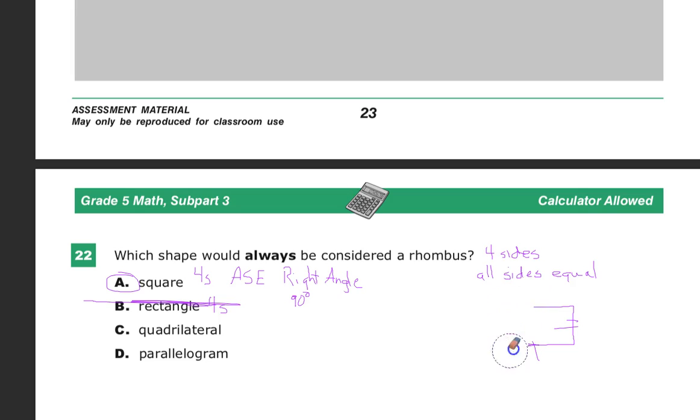Quadrilateral. Quadrilateral is any four-sided figure. Four sides. But all sides being equal is not a component. Opposite sides being equal is not a component. Right angles is not a component. Necessarily. It could be any of these things.